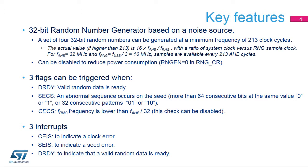The rule of thumb is: the lower the RNG clock, the better the entropy for the sampled random source.